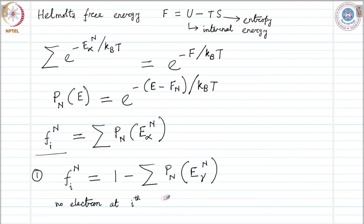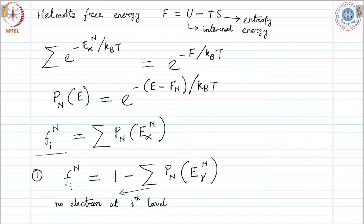So in order to be consistent, these are the probabilities for which there is no electron at the i-th level, and 1 minus that sum gives us the probability of finding one electron at the i-th level. That is the idea — that is how we are going to approach this.